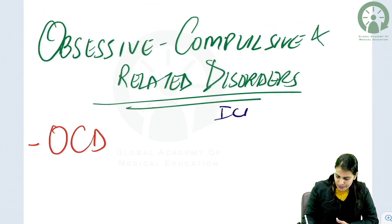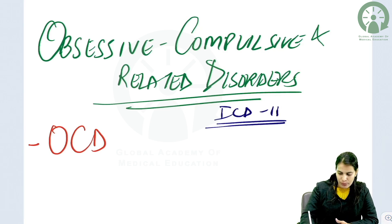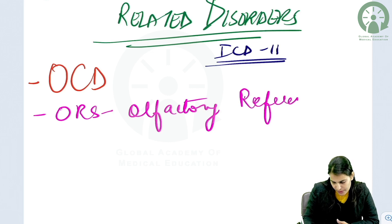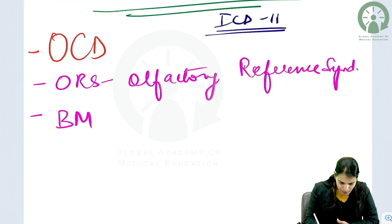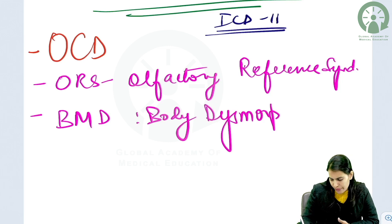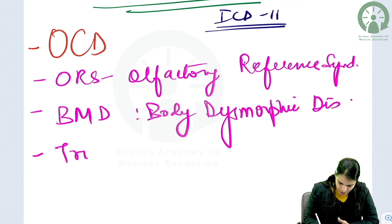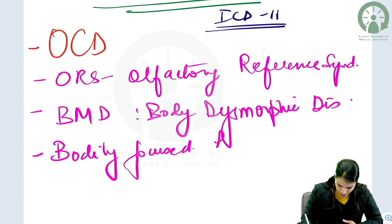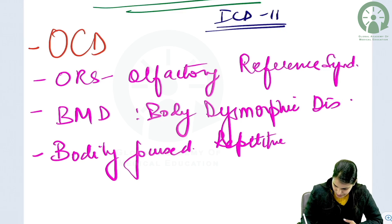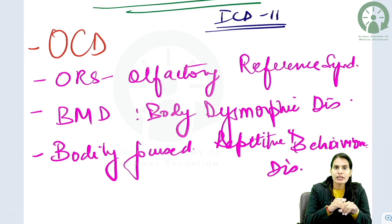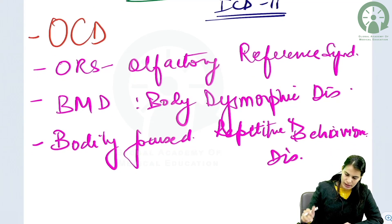As per ICD-11, apart from OCD, the disorders included are ORS, that is Olfactory Reference Syndrome, and BDD, that is Body Dysmorphic Disorder. There are also Body-Focused Repetitive Behaviors, which include behaviors like pulling off hair, scratching nails, and excoriating skin. These repeated bodily-focused behaviors form another diagnosis included in ICD-11.